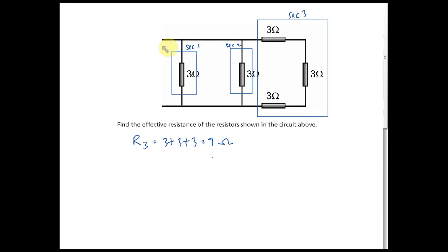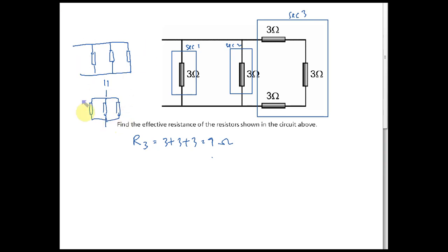Section one, section two, and section three are all in parallel. Section one and section two are each 3 ohm, and section three is 9 ohm. So the effective resistance = (1/3 + 1/3 + 1/9) reciprocal = 9/7 ohm.